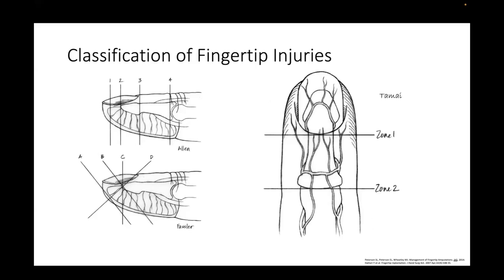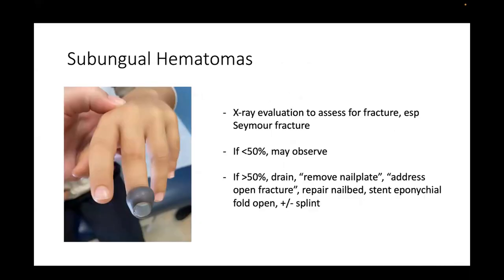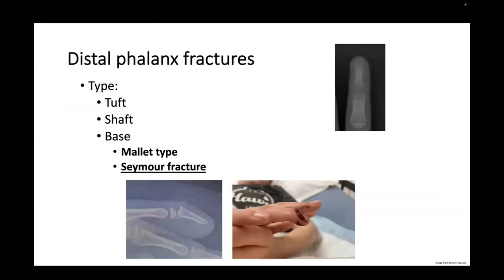The Tamai classification is based upon vascular supply and is useful for planning replantation. For subungual hematomas, x-ray evaluation is essential to assess for fracture, especially Seymour fractures. If less than 50% of the nail plate is involved, you can observe; if greater than 50%, the recommendation is to drain, remove the nail plate, address any open fracture, repair the nail bed, and stent the eponychial fold open with or without a splint.